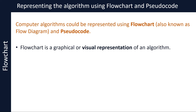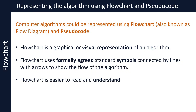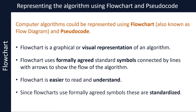A flowchart is a graphical or visual representation of an algorithm. It uses formally agreed standard symbols connected by lines with arrows to show the flow of the algorithm. Due to its graphical nature, a flowchart is easier to read and understand. Since flowcharts use formally agreed symbols, these are standardised and you don't find any variations in terms of how flowcharts are presented.